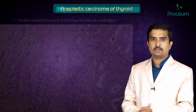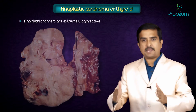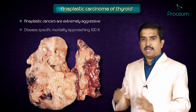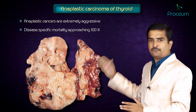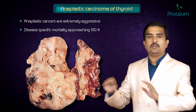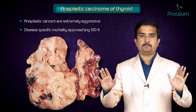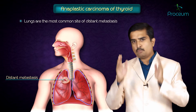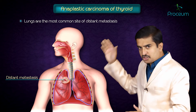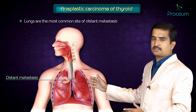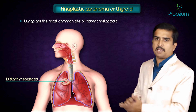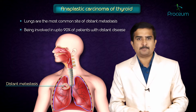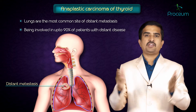Anaplastic cancers are extremely aggressive with a disease-specific mortality approaching nearly 100%. The lungs are the most common site for distant metastasis in the anaplastic type, being involved in approximately up to 90% of patients with distant disease.